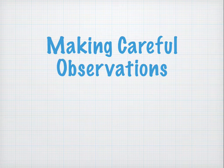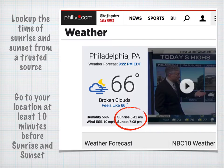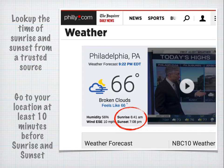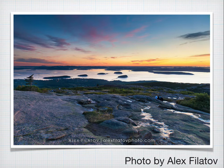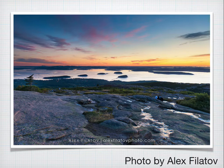The next thing we're going to do is make careful observations on the date of the equinox. You want to look up the time and date of sunrise and sunset from a trusted source, make sure it is the time and date for the equinox, and go to your location at least 10 minutes before sunrise or sunset. The goal is to record the exact moment of sunrise or sunset. This is a beautiful image, but it is not the exact moment — the sun, you just can't see it peeking over the horizon. You don't want moments like this.